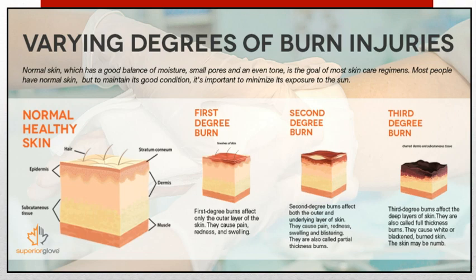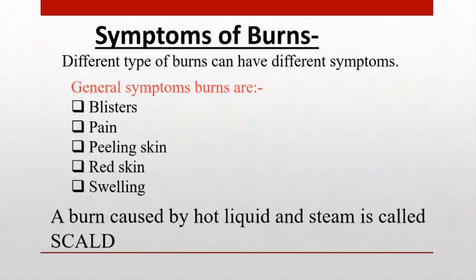Third degree burns are deep burns present in the fatty layer. They affect the deep layers of the skin and are also called full thickness burns. They cause white or blackened burnt areas and the skin may be numb.